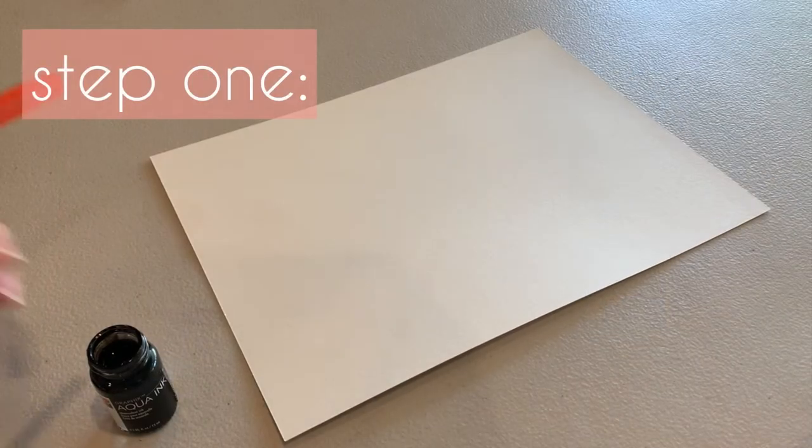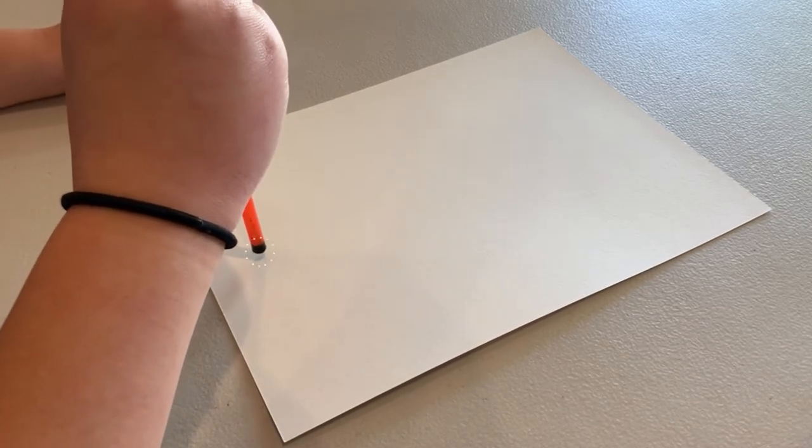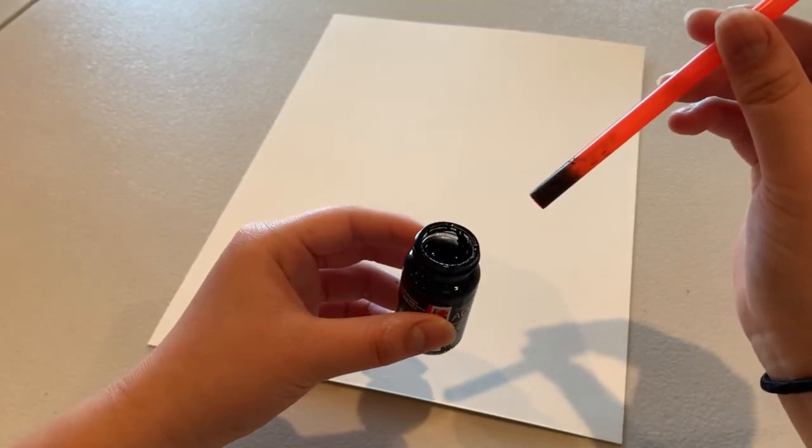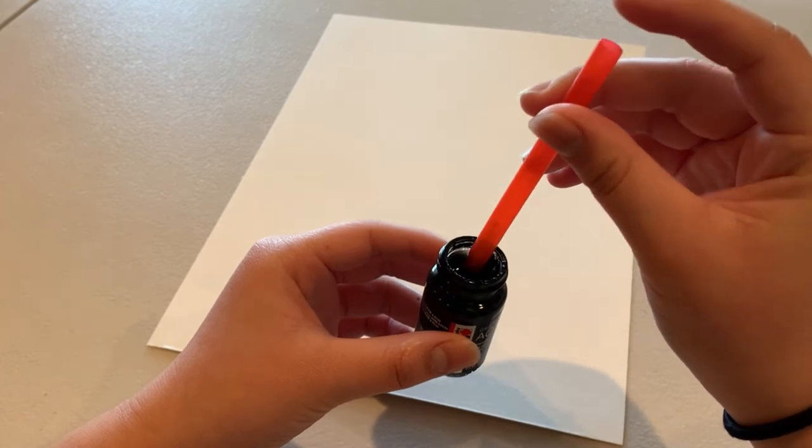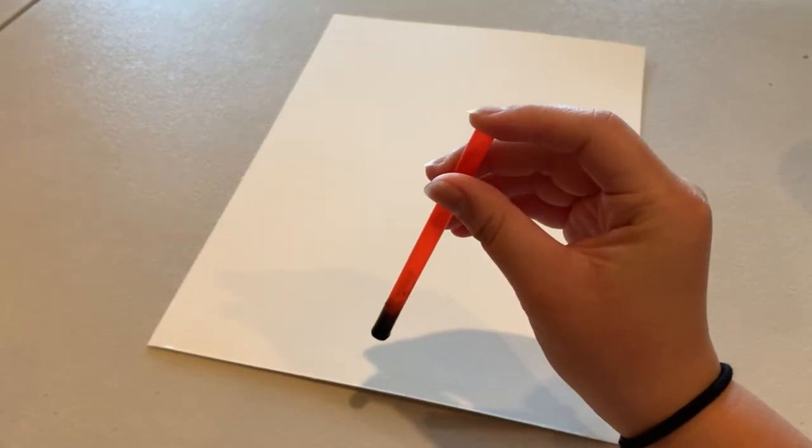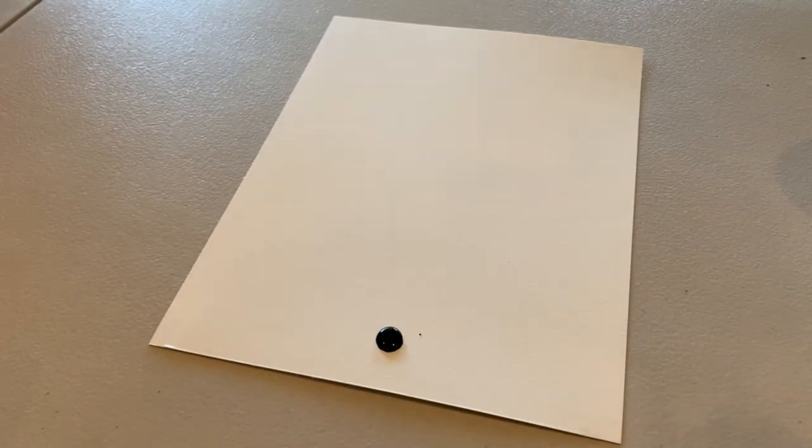The first step is to take your straw and use it to place a good-sized droplet of ink, about a little smaller than a pea, towards the bottom of your paper. Use a straw to pick up the ink. Place the straw inside the bottle of ink and cap the top of the straw with your finger. Move the end of the straw to where you want to put the ink and release your finger.